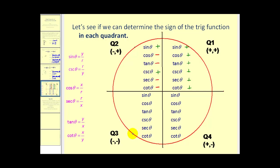In the third quadrant, both the x and y coordinates are negative. Anything involving only x or only y would be negative. However, tangent and cotangent involve a negative divided by a negative, so these two remain positive. All the other functions only involve an x or a y, so they will all be negative. Remember, r is always positive.